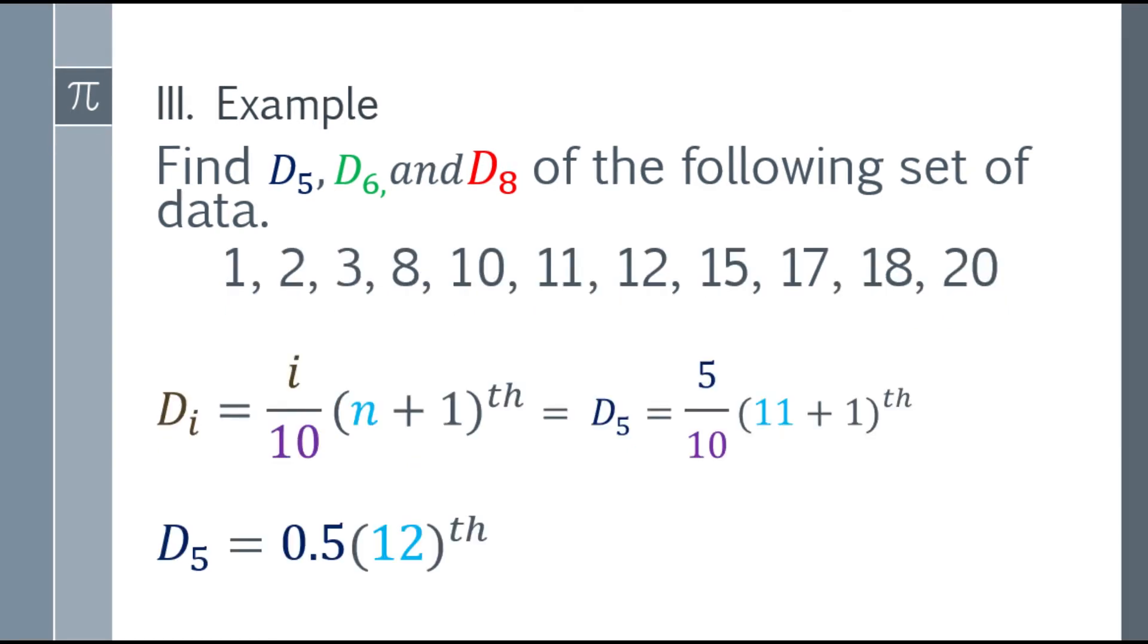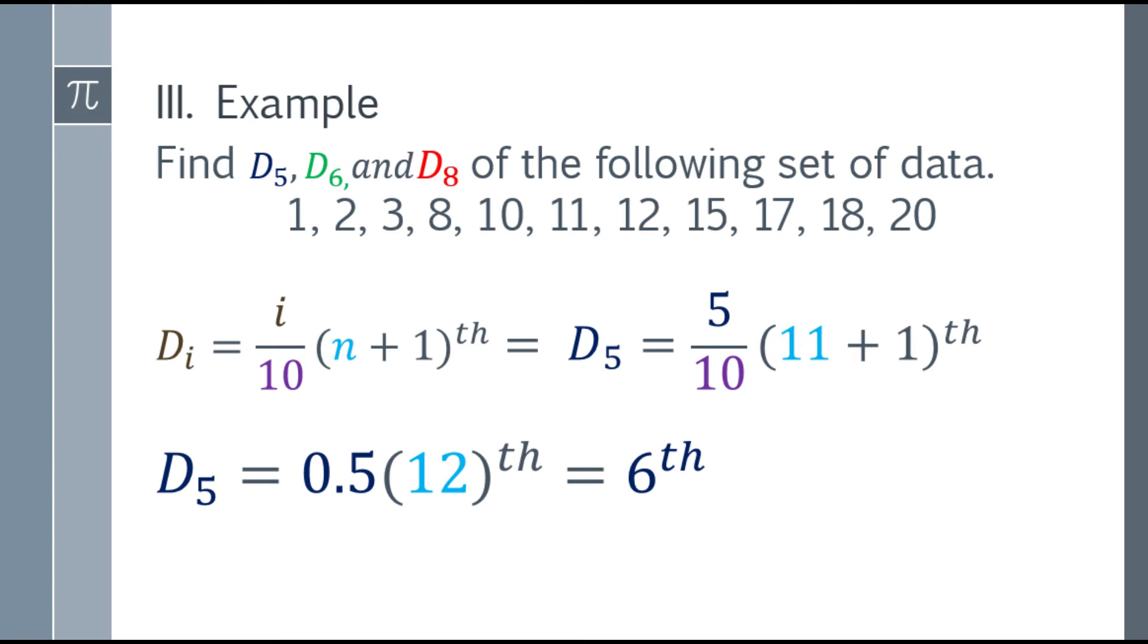Next, simplify it. So 11 plus 1, that will be 12, inside the parentheses. And 5 over 10, that will be 0.5. So let's simplify. 0.5 multiplied by 12, that will be 6. So the 5th decile is the 6th number.